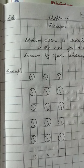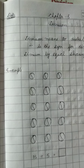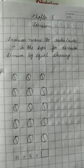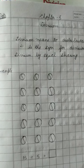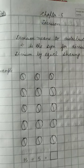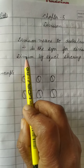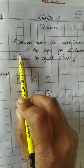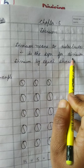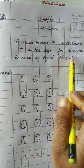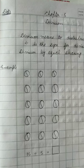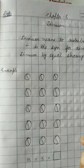Hello students, today we are going to start chapter 5: division. Division means to distribute, which means to divide something or to give something to a group of people. This is the sign for division — one line and two dots. In your syllabus we have division by equal sharing and division by repeated subtraction. First of all, we are going to do division by equal sharing.